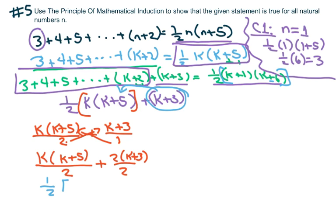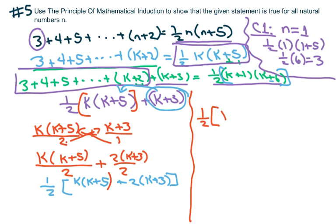I'm going to bring out the 1/2 again and write this as k times k plus 5 plus 2 times k plus 3. I'm going to simplify this quantity. We get 1/2 times k squared plus 5k plus 2k plus 6, so you get 1/2 times k squared plus 7k plus 6.